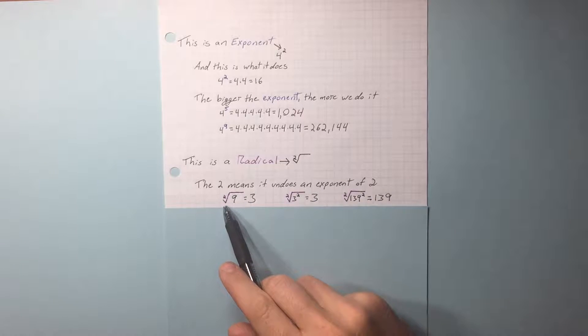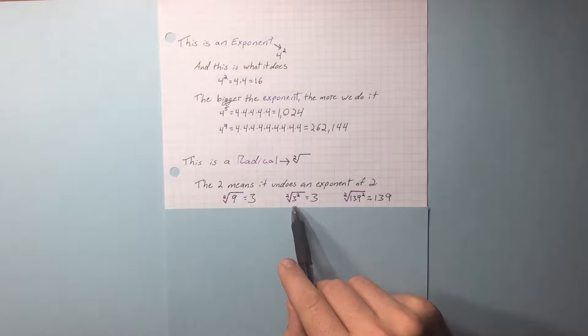Here are some examples. The square root of 9 is 3. The square root of 3 squared is 3.